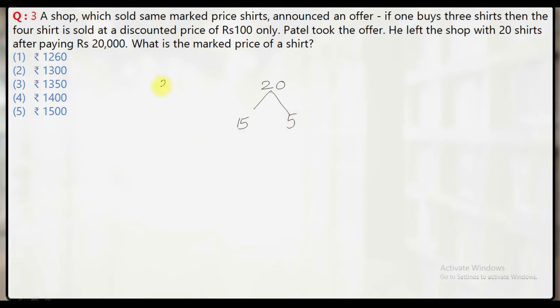Let's say the marked price of each shirt is Rs.X. For these 15 shirts he must have paid 15×X, and for the remaining 5 shirts he will pay 5×100 which equals Rs.500.